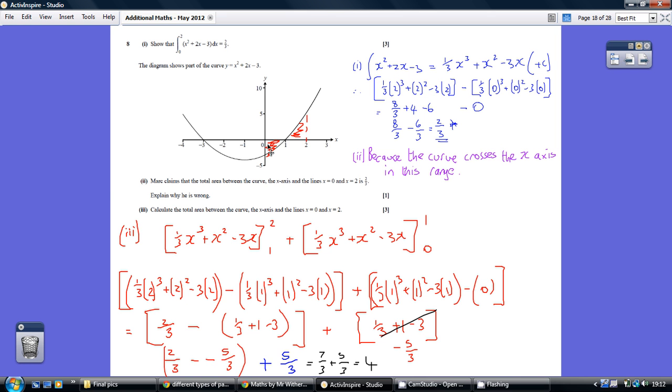The area between 1 and 0 will come out negative, but you can't have a negative area. So take the positive value and add it to the positive value of the first area.